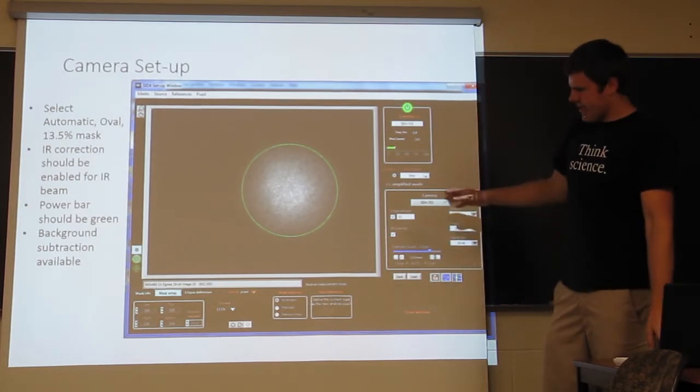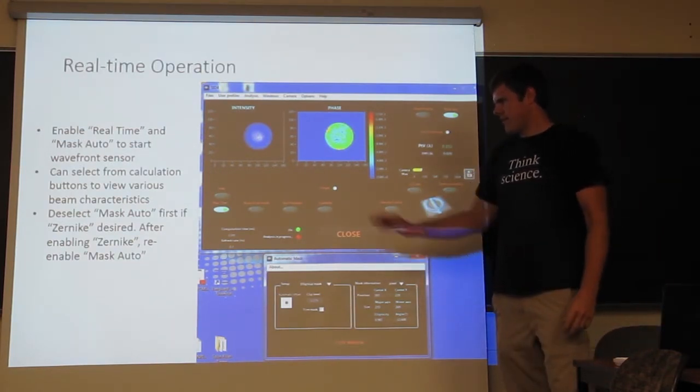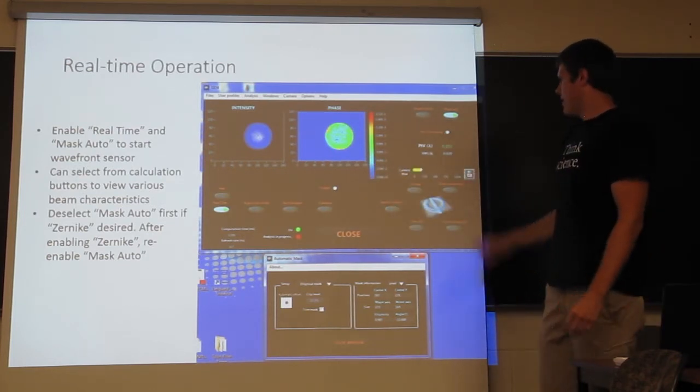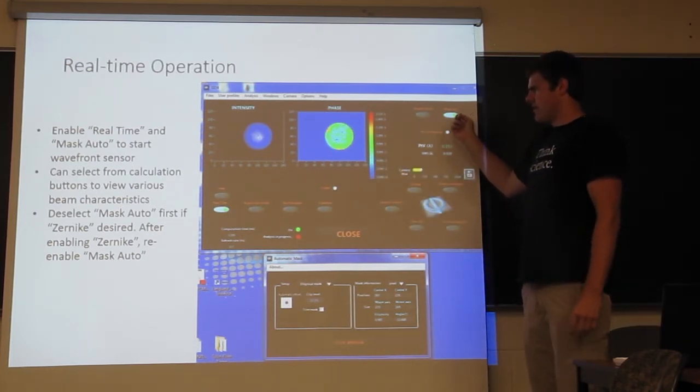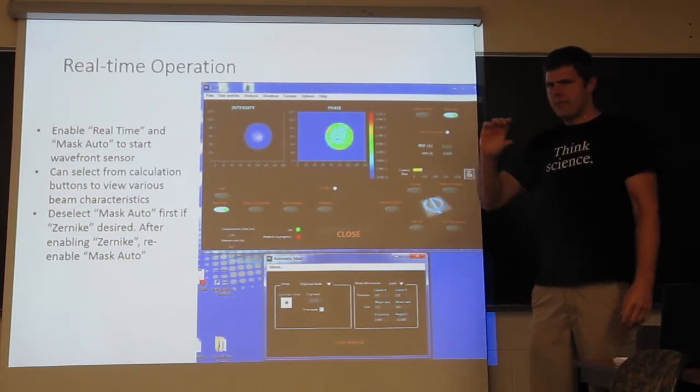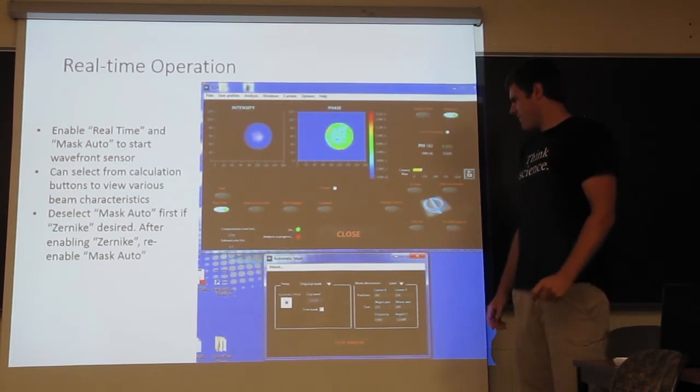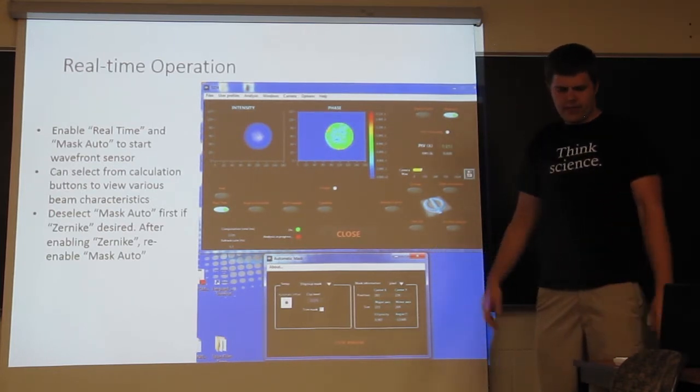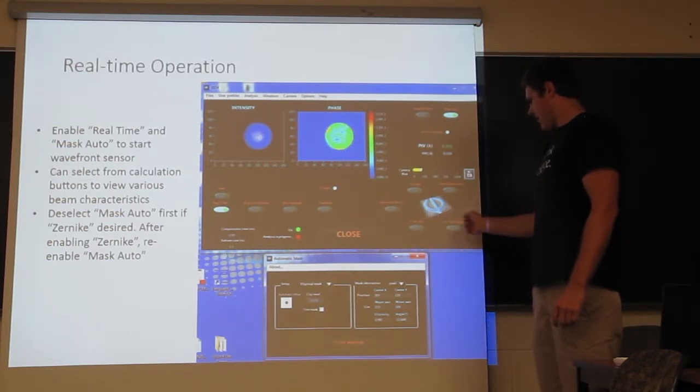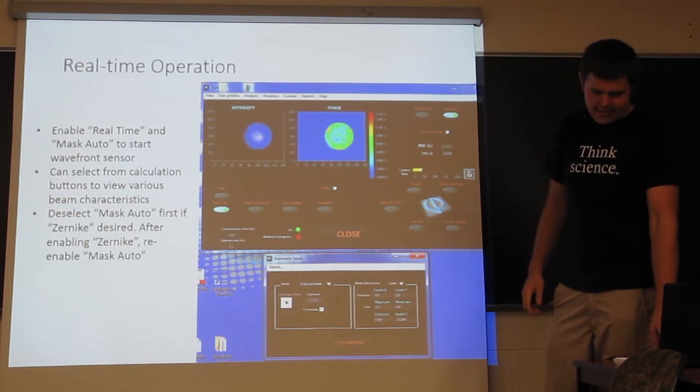So after you get that set up, then you want to go back to its main window and hit real-time, so that's continuous acquisition, and then you want to hit mask auto, so this is an extra feature we had to buy, so that the analysis mask would move with the beam as it changes during alignment. To that point, you're ready to use the wavefront sensor, and most likely you're going to click one of these buttons, which we're going to talk about now, and that is the calculation buttons.